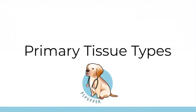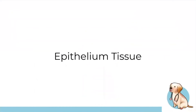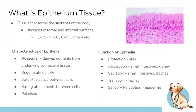Now for primary tissue types. We'll cover three: epithelium, muscle, and bone. Technically there are four — neurons are the fourth but will be covered later when you learn about synaptic transmission. Epithelium tissue is all the tissue lining the surfaces of the body — skin, GI tract, cardiovascular system, and urinary tract.